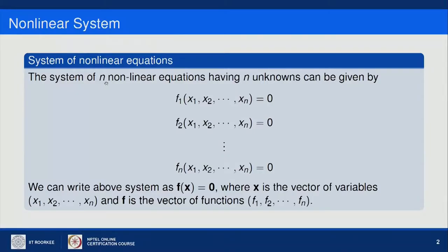Consider a system of n non-linear equations having n unknowns, written as: f₁(x₁, x₂, ..., xₙ) = 0; f₂(x₁, x₂, ..., xₙ) = 0; and so on up to fₙ(x₁, x₂, ..., xₙ) = 0. We have n equations, each denoted by f₁ through fₙ, each with n unknown variables x₁ through xₙ. Solving this non-linear system means finding values of x₁, x₂, ..., xₙ which satisfy all those equations.